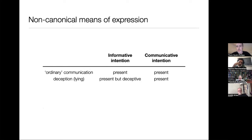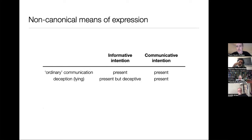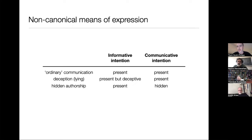In ordinary communication, there's both an informative aspect — what you want to do to an audience's mind — and a communicative aspect, which is that you announce to the audience that you want to do something to their mind. Those familiar with philosophy of language may recognize this idea of deriving meaning from intentions from the work of Paul Grice. In deception, both the informative and communicative aspects are present, but the informative aspect is what is deceptive. In hidden authorship, there is an informative intention, but you don't announce that that's what you're doing — the communicative aspect is not present; it's actively hidden.